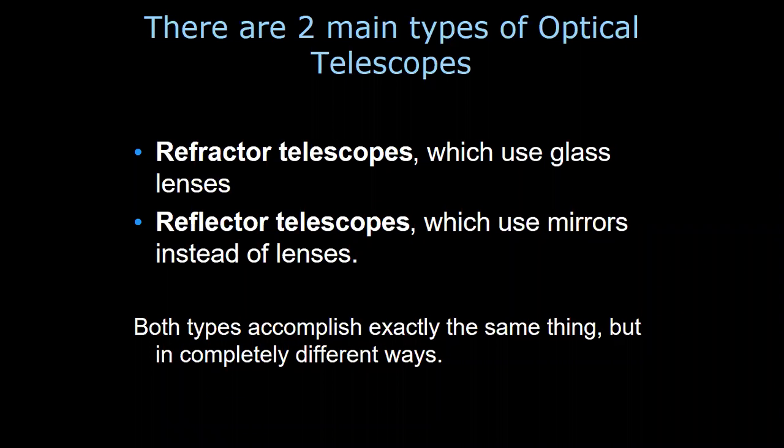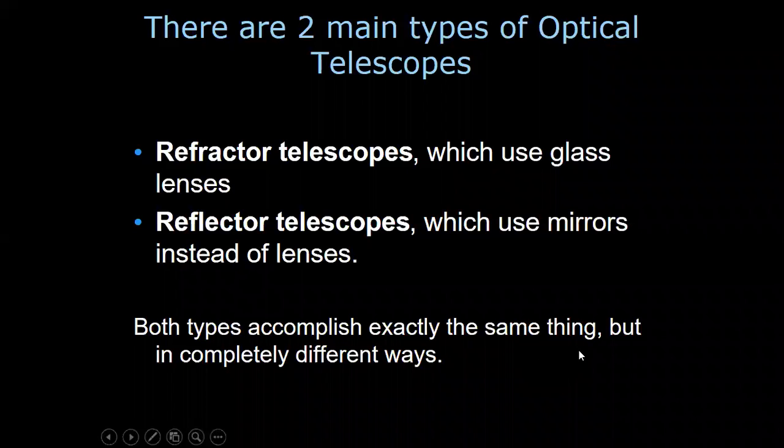There are two main types of optical telescopes. One is refractor telescopes, where we use glass lenses, and reflector telescopes, where we use mirrors instead of lenses. The name comes from that property of light — reflection or refraction. Both types accomplish exactly the same thing but in completely different ways.